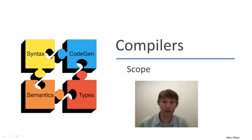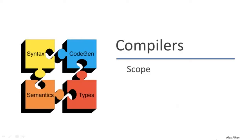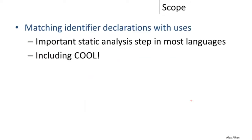Welcome back. In this video we're going to begin our discussion of semantic analysis with the topic of scope. The motivating problem is that we want to match identifier declarations with the uses of those identifiers — we need to know which variable we're talking about when we say variable X, if X might have more than one definition. This is an important static analysis step in most programming languages, including Cool.